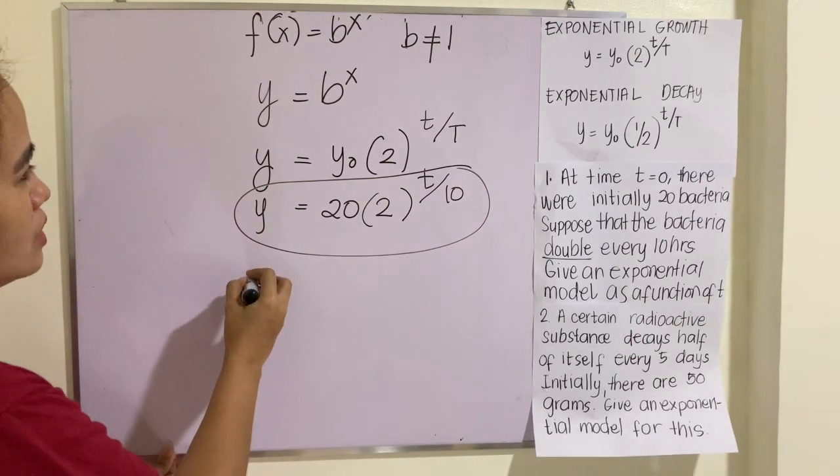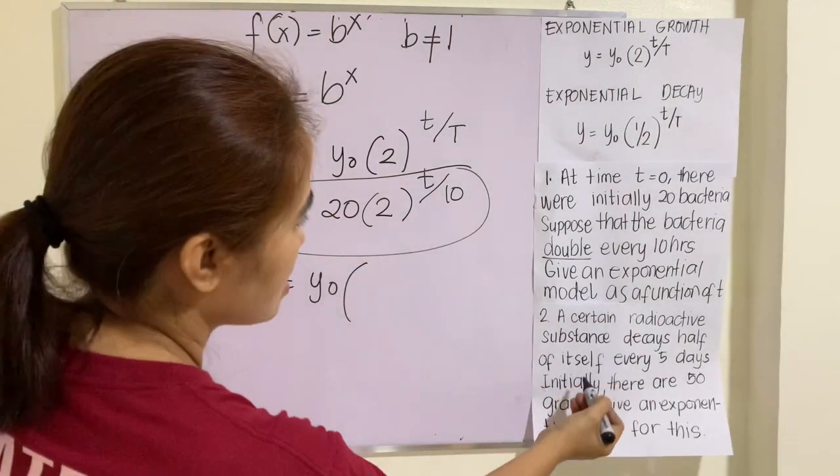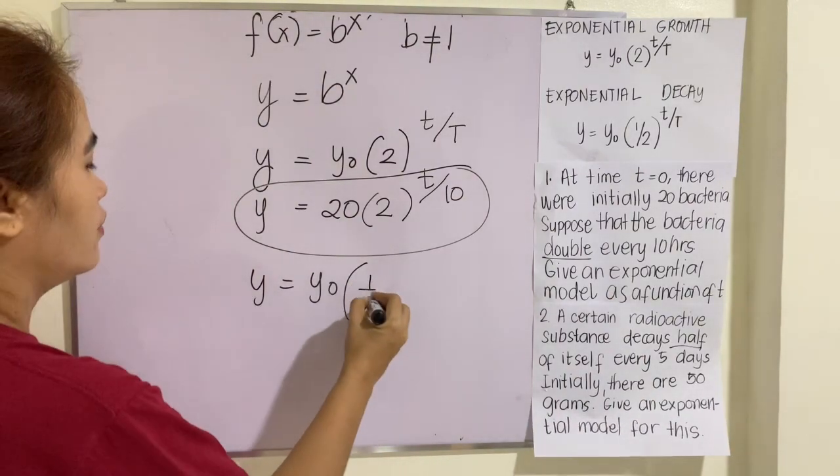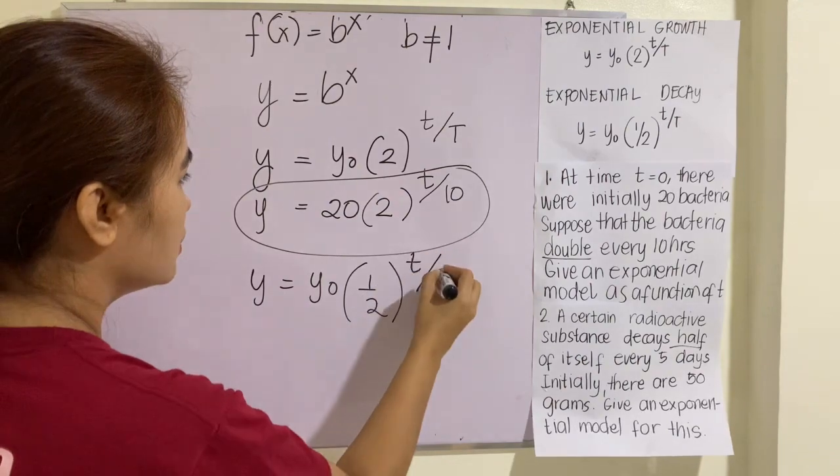So easy, decaying. So that is y equals y sub 0. It's half. It says here half, 1. So this is 1 half T over big T.